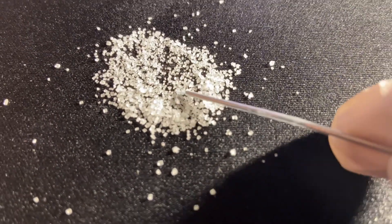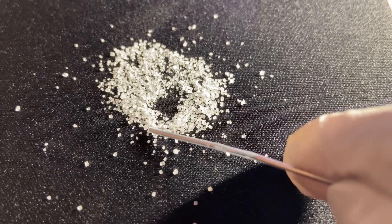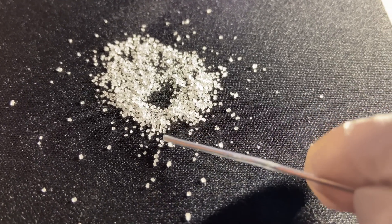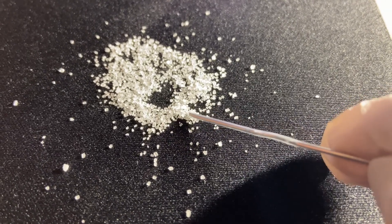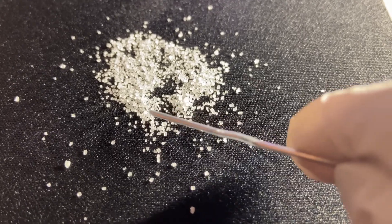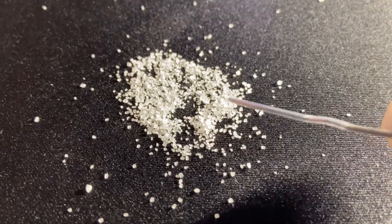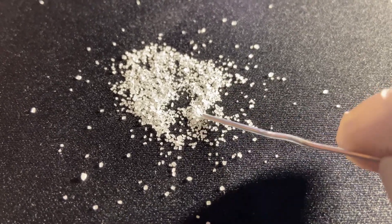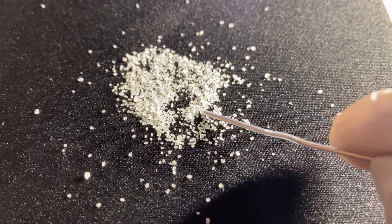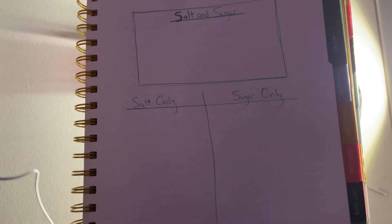I'll wipe my paper clip and now let's go ahead and try sugar. Sugar seems to be doing the same thing. Sugar is not squishing underneath the paper clip, it's just bouncing off, meaning that the sugar actually feels — what do you think, hard or soft? Is the sugar hard or soft? Let's put our observations in the correct column or box.